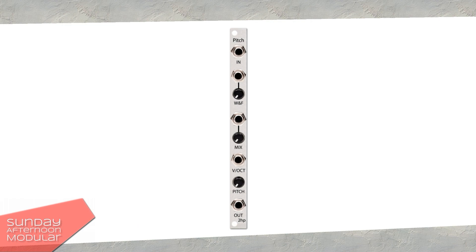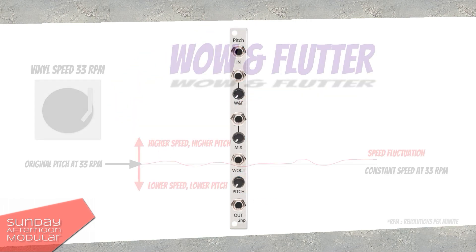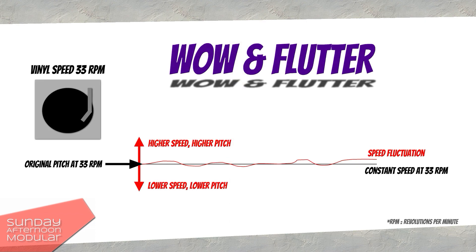Pitch is a Time Domain Pitch Shifter module that comes with Wow and Flutter. Wow and Flutter comes from the irregularities of old tape machines, cassette recorders and players, and other analog devices with rotary components such as movie projectors or turntables. Those irregularities cause speed and therefore pitch fluctuations. The result of this can be heard as a frequency wobble.